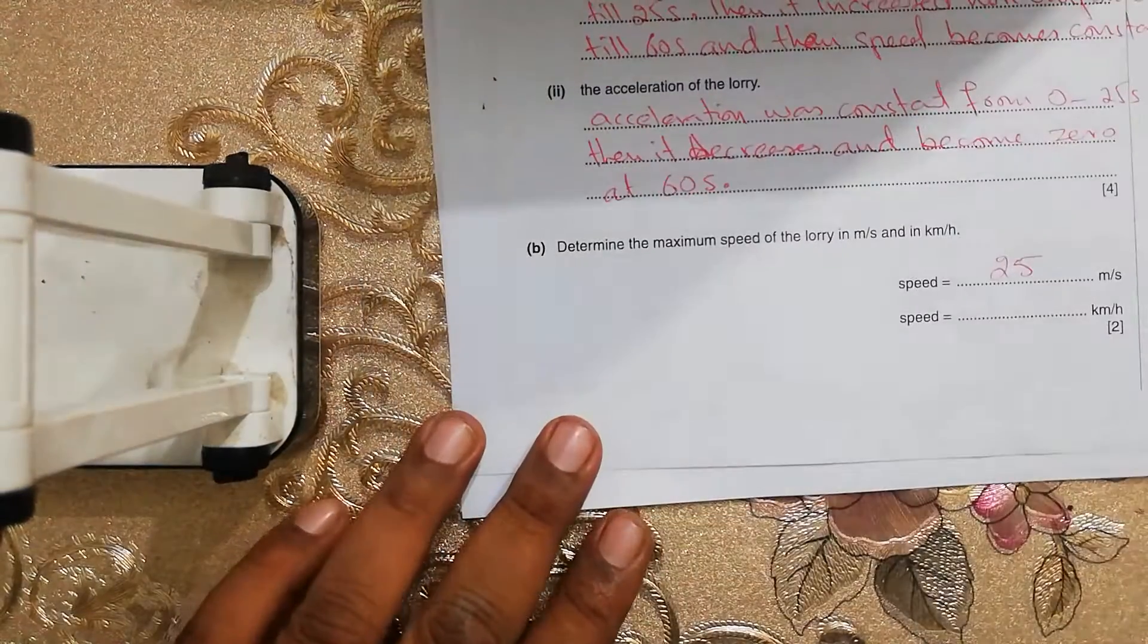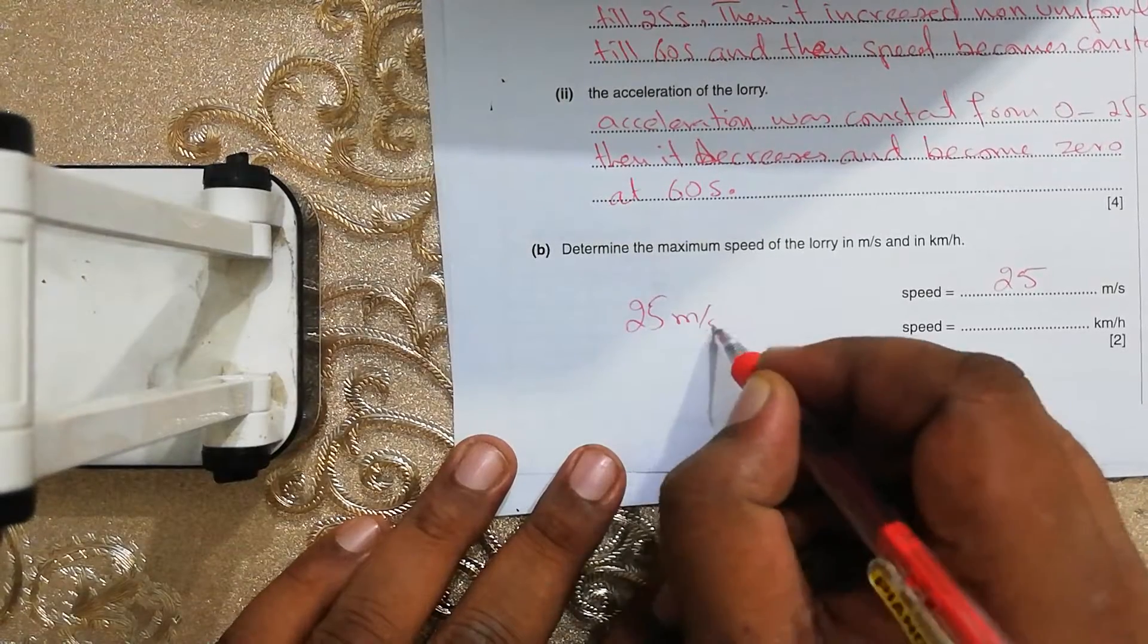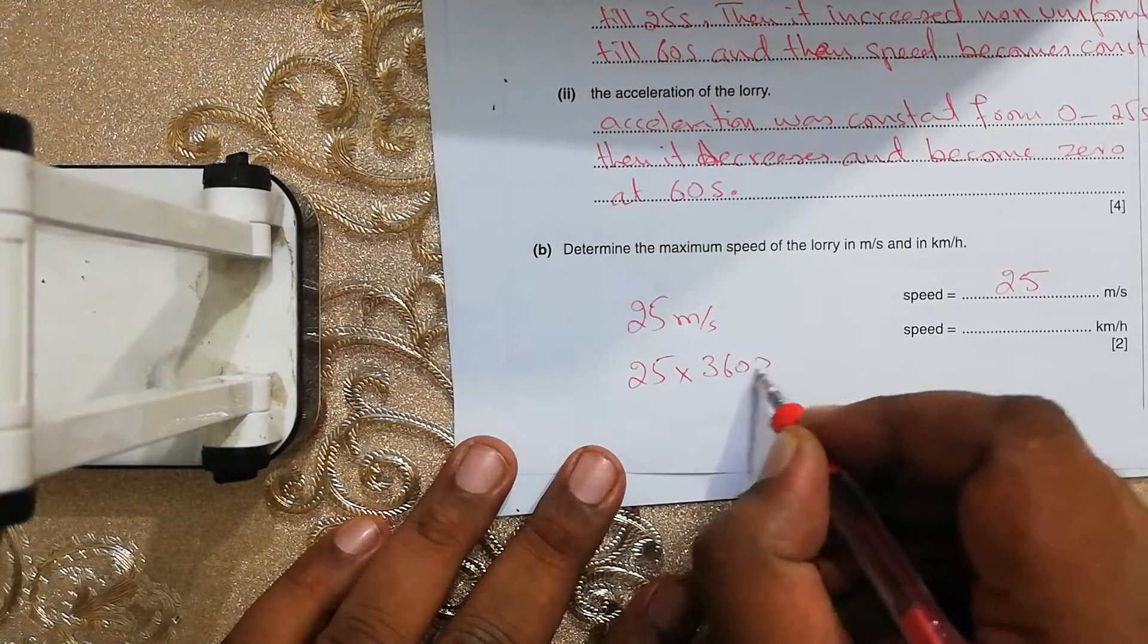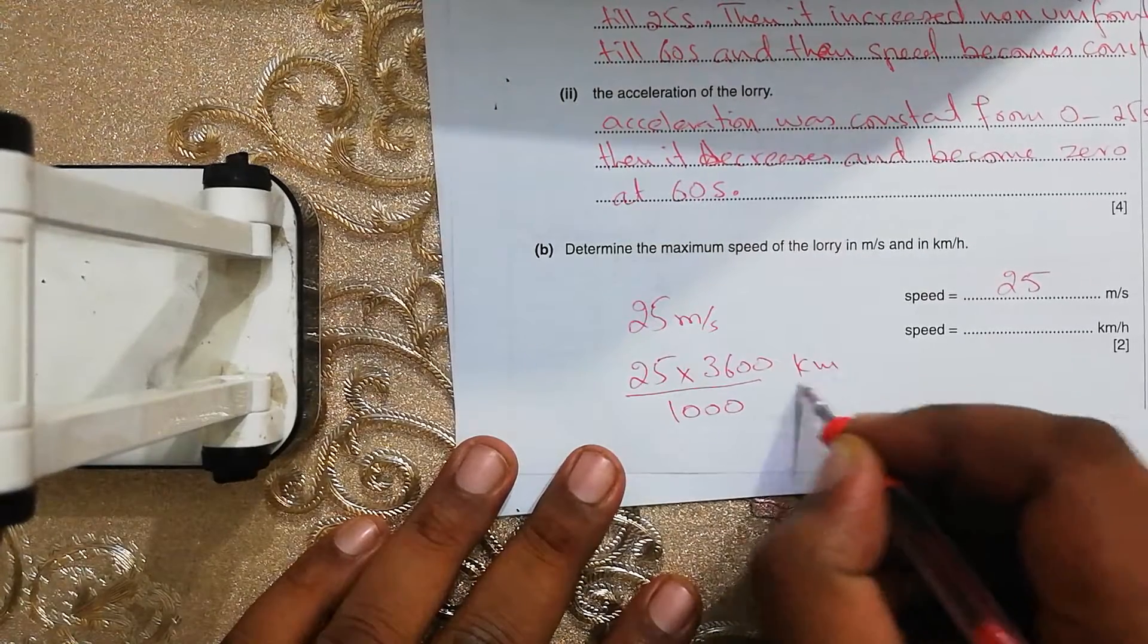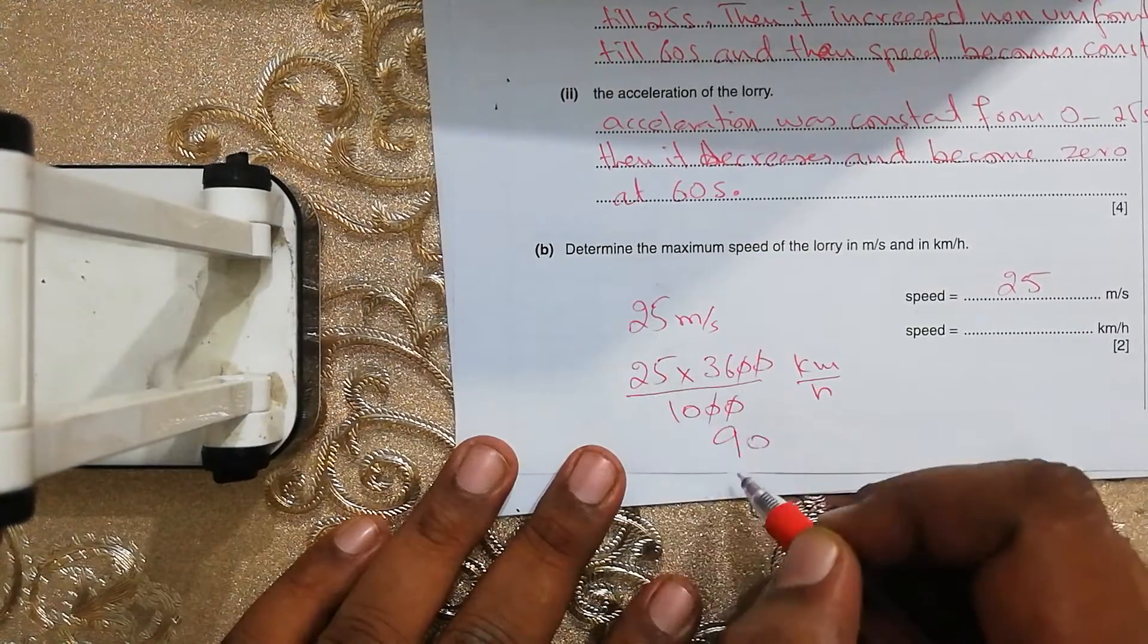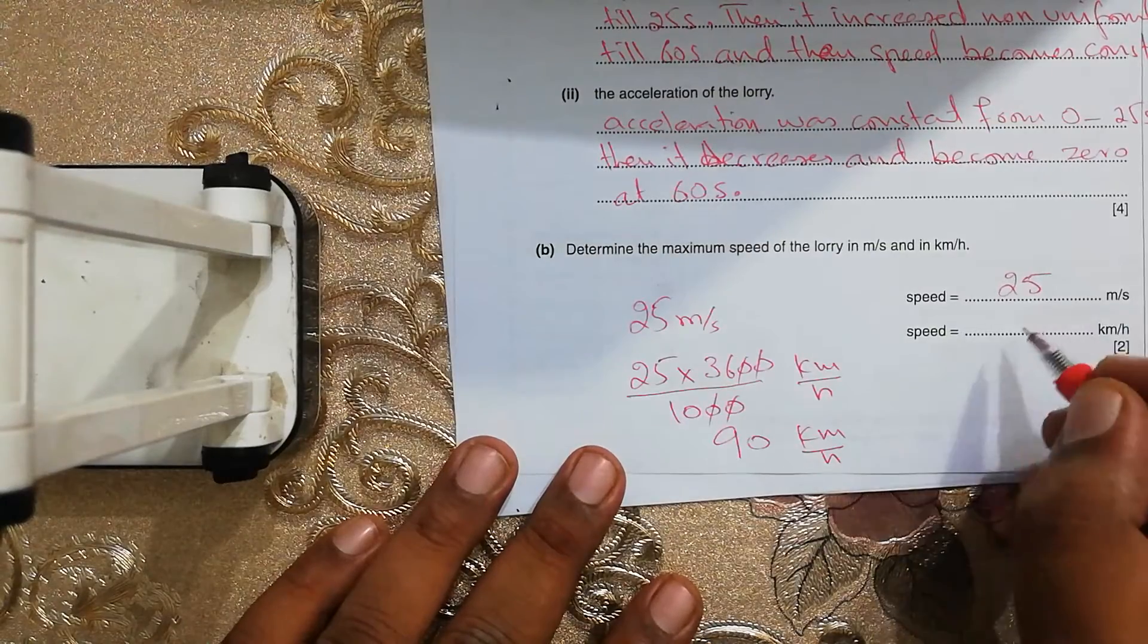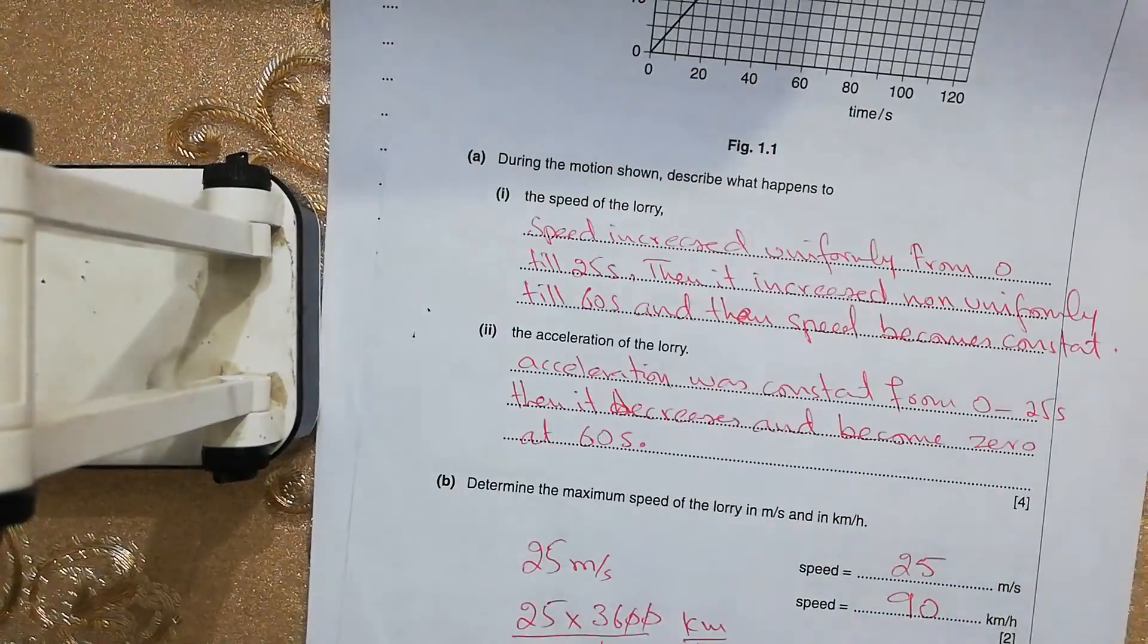But the question also asks to convert into kilometer per hour. So very simple, 25 meter per second. If you want to convert the 25 meter per second speed into kilometer per hour, you have to multiply with 3600 and divide with 1000. And this will be converted into kilometers per hour. The answer will be 90. So you get 90 kilometer per hour. So the speed is 90 kilometer per hour. I hope that you understand this question.